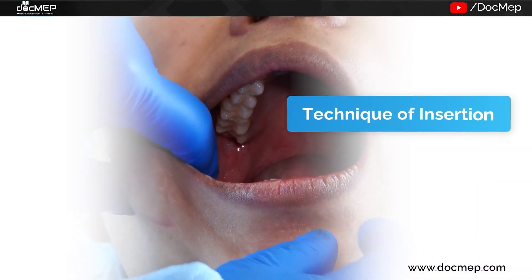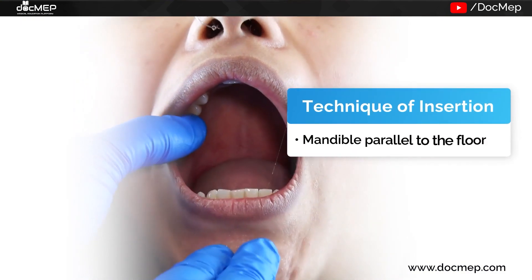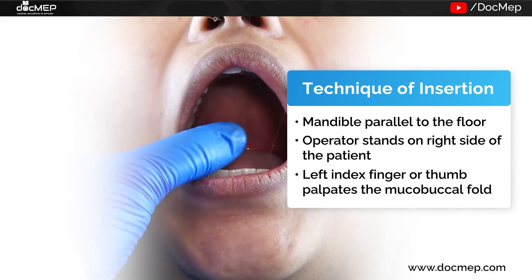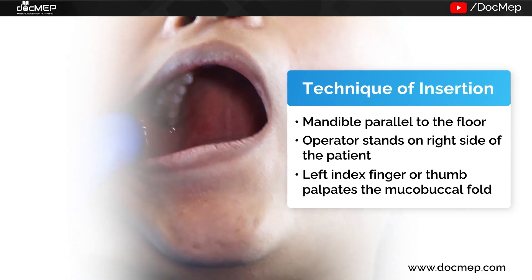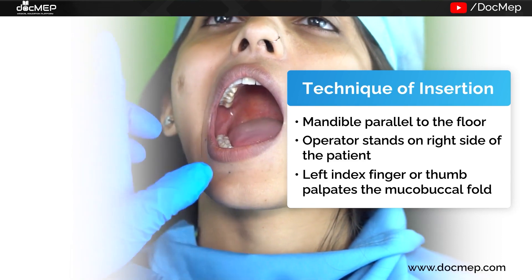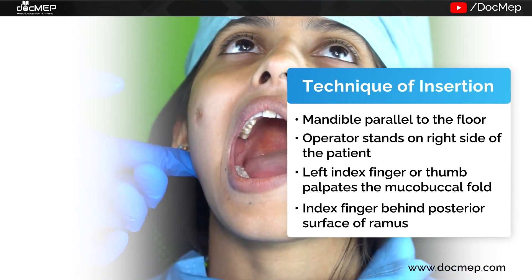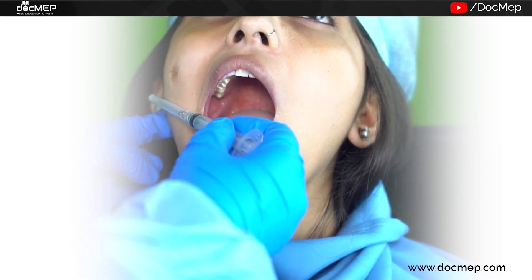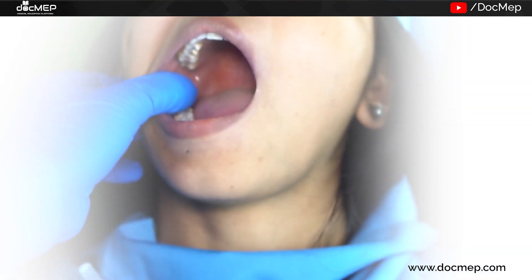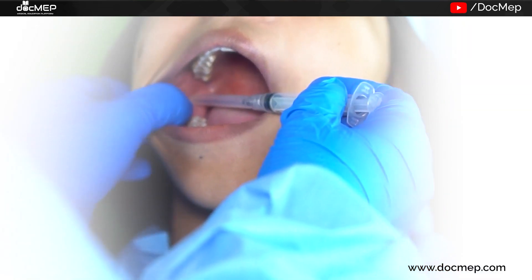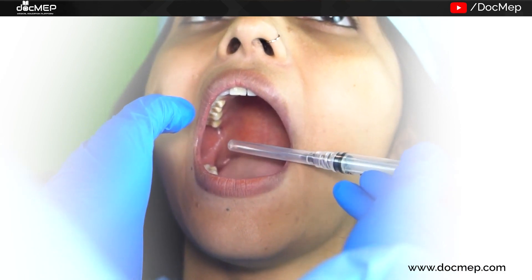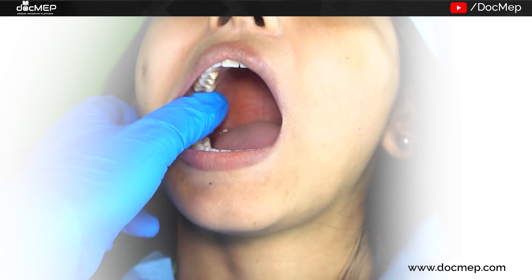Now let us look at the technique of injection. The head should be positioned such that the body of the mandible is parallel to the floor. The operator stands to the right side of the patient with the left index finger or thumb palpating the mucobuccal fold. During this time, the index finger should go behind and hold the posterior surface of the ramus of the mandible. This gives us an idea of the flare and the width of the mandible. The finger or thumb then contacts the ramus of the mandible.